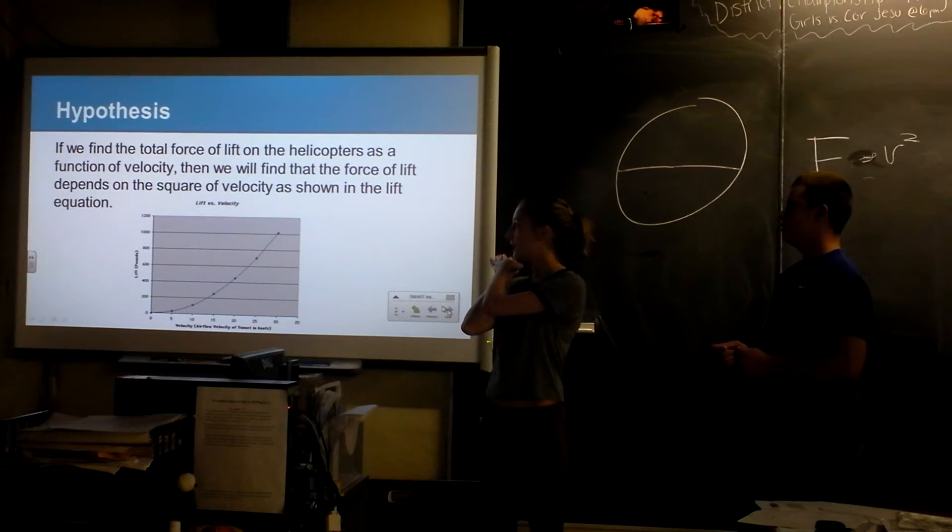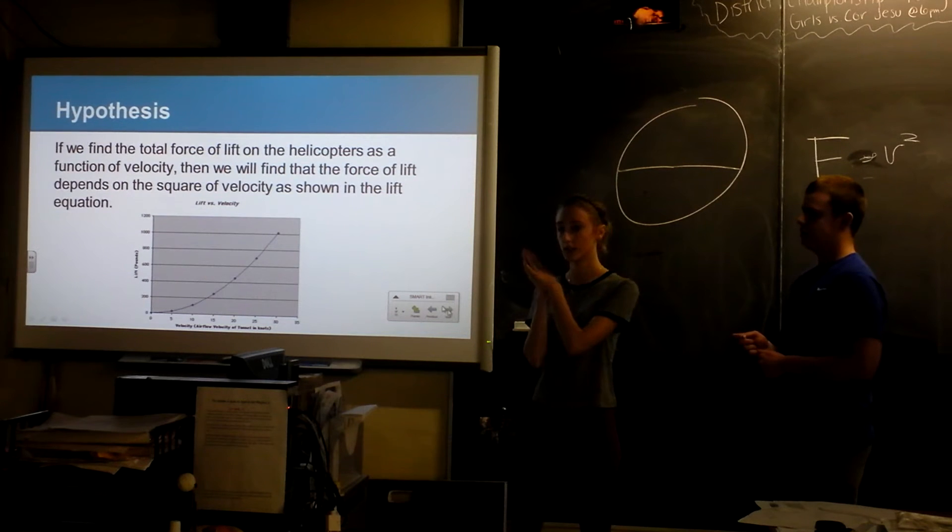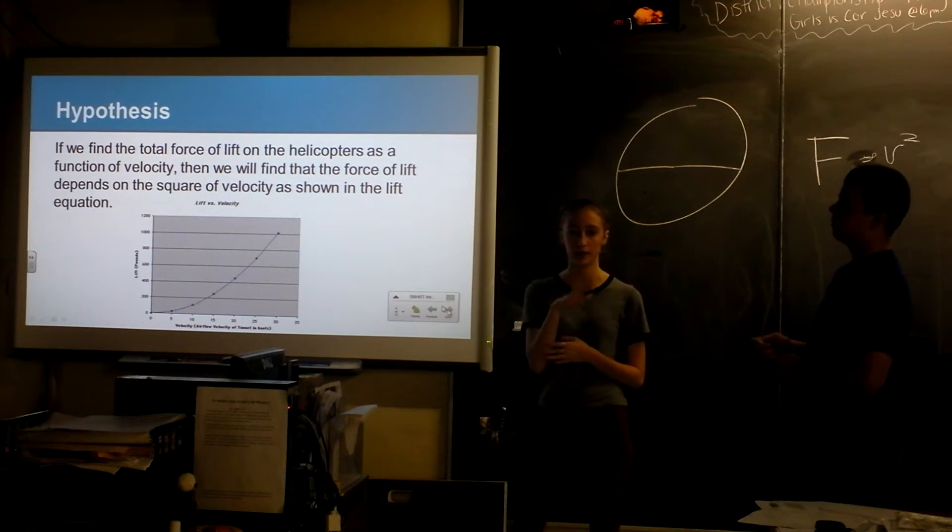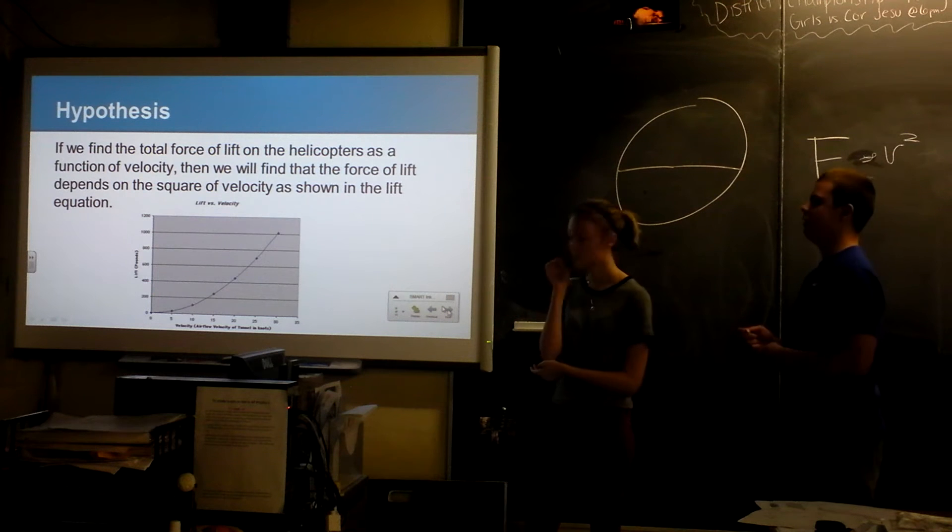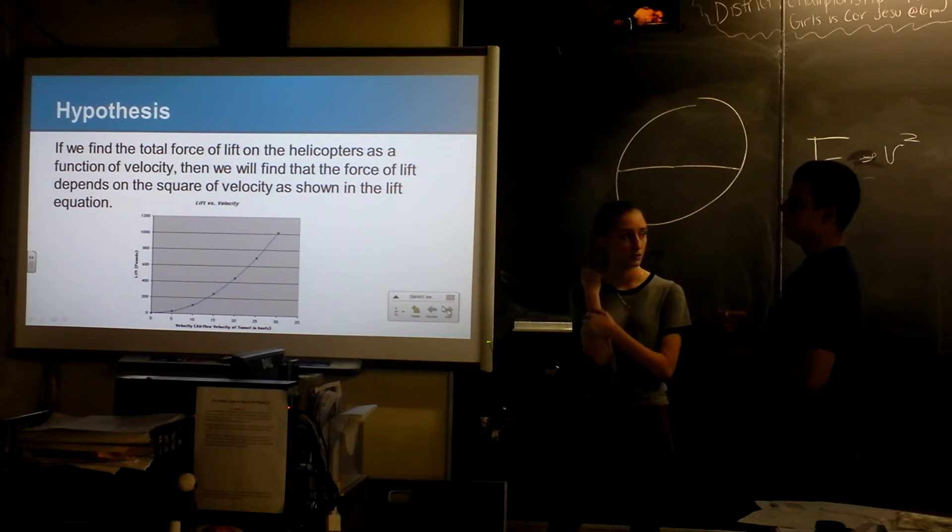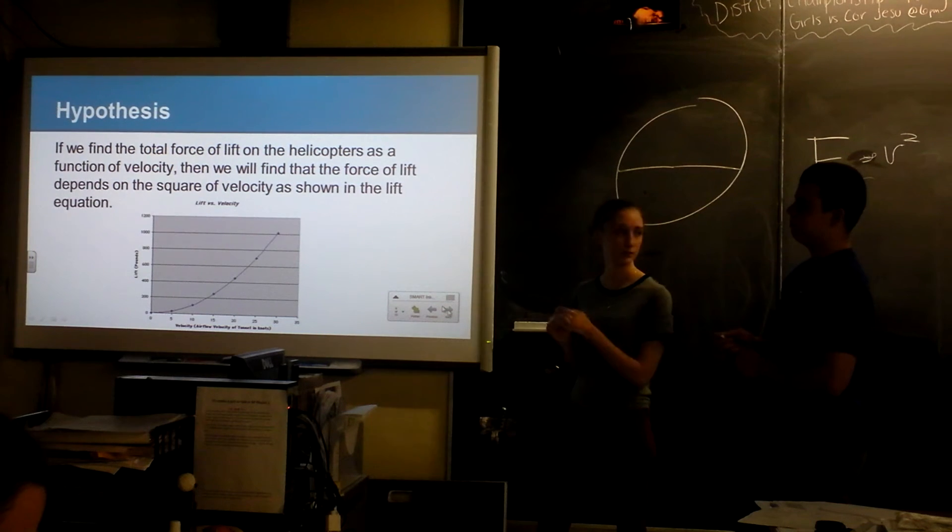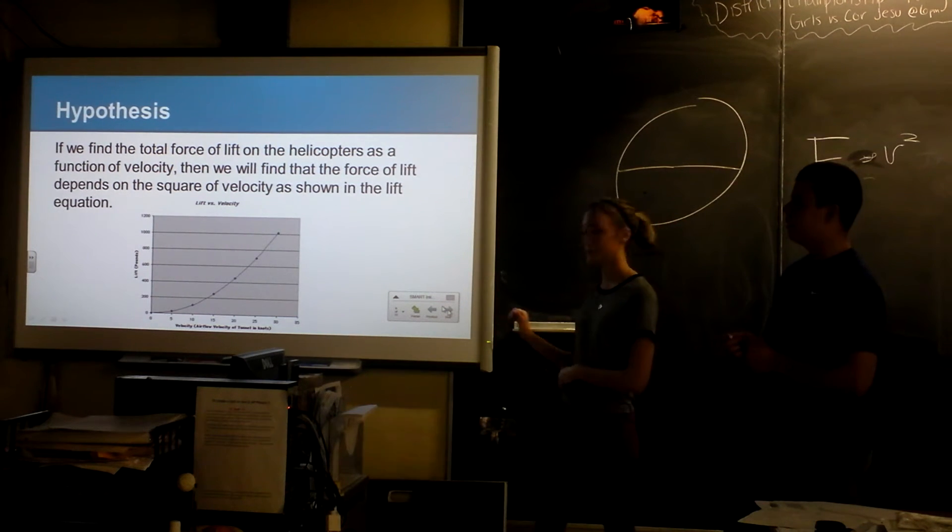So we predicted that the force would depend on the velocity squared. And that's shown by that graph. That's the most ideal force versus velocity graph. So that's what we're going to compare our results to.